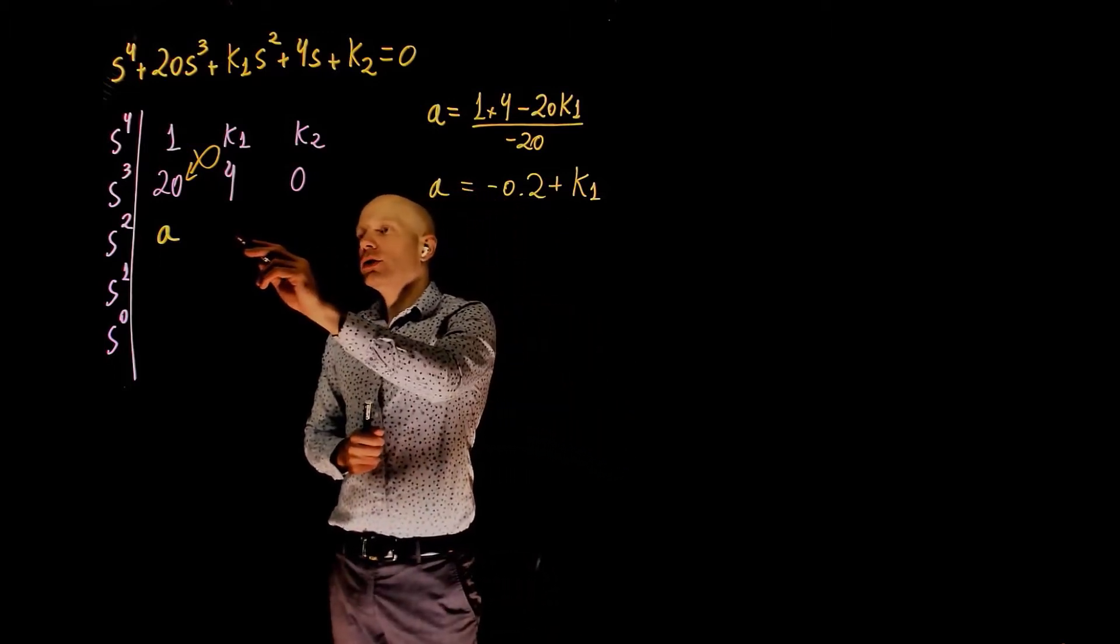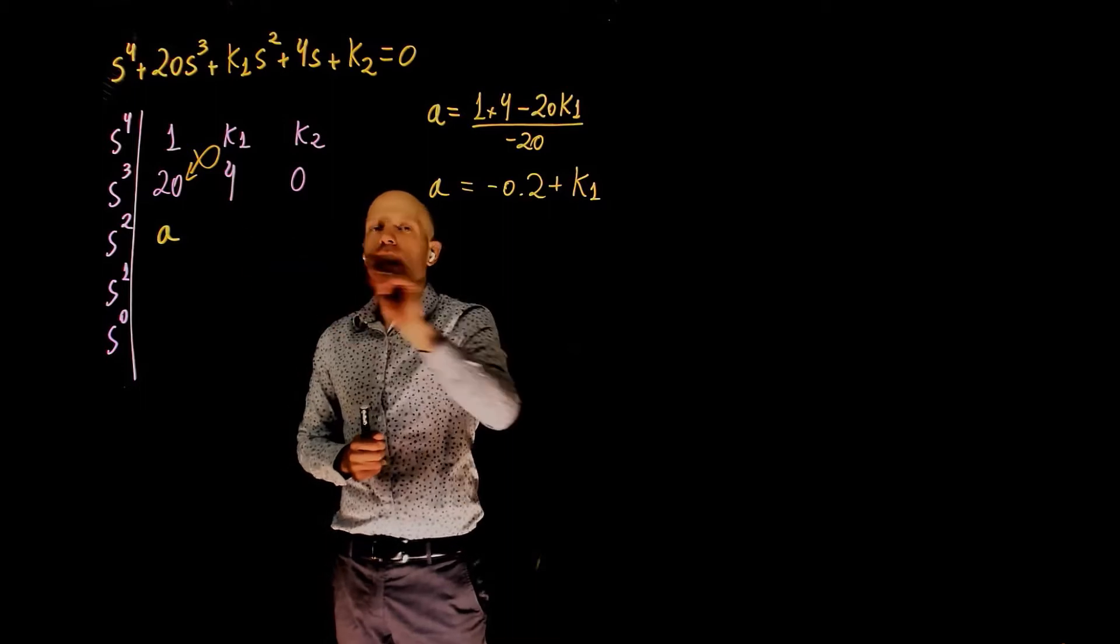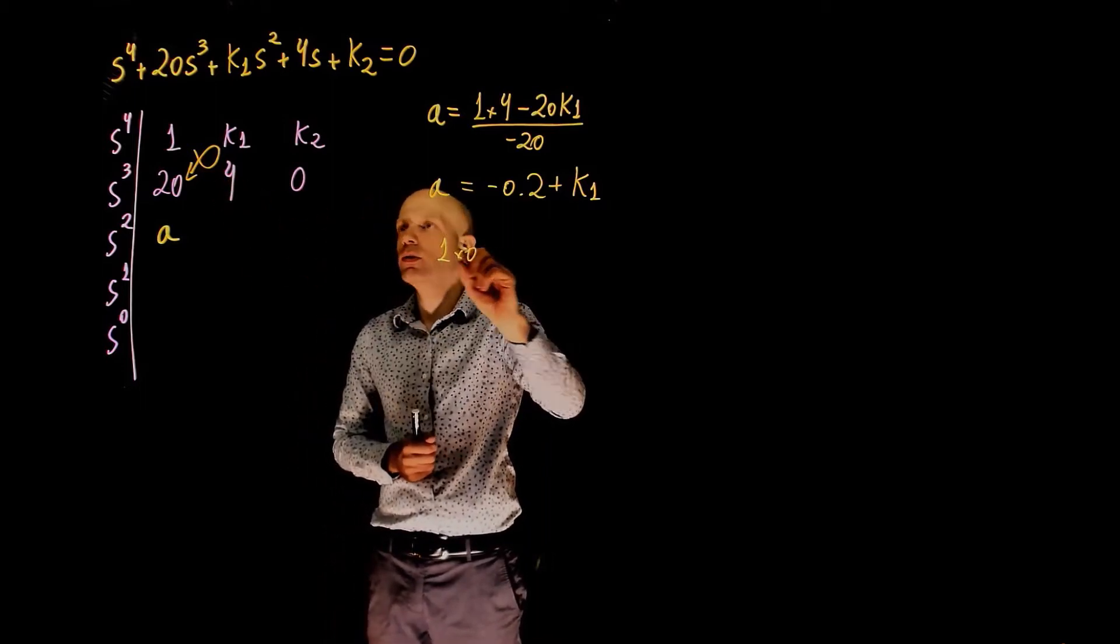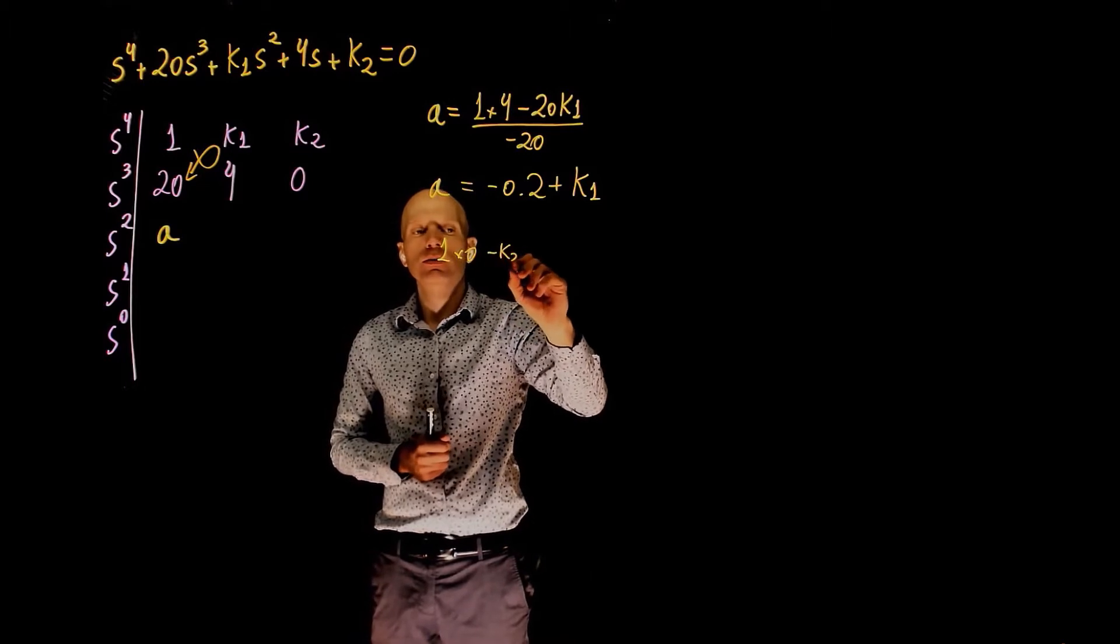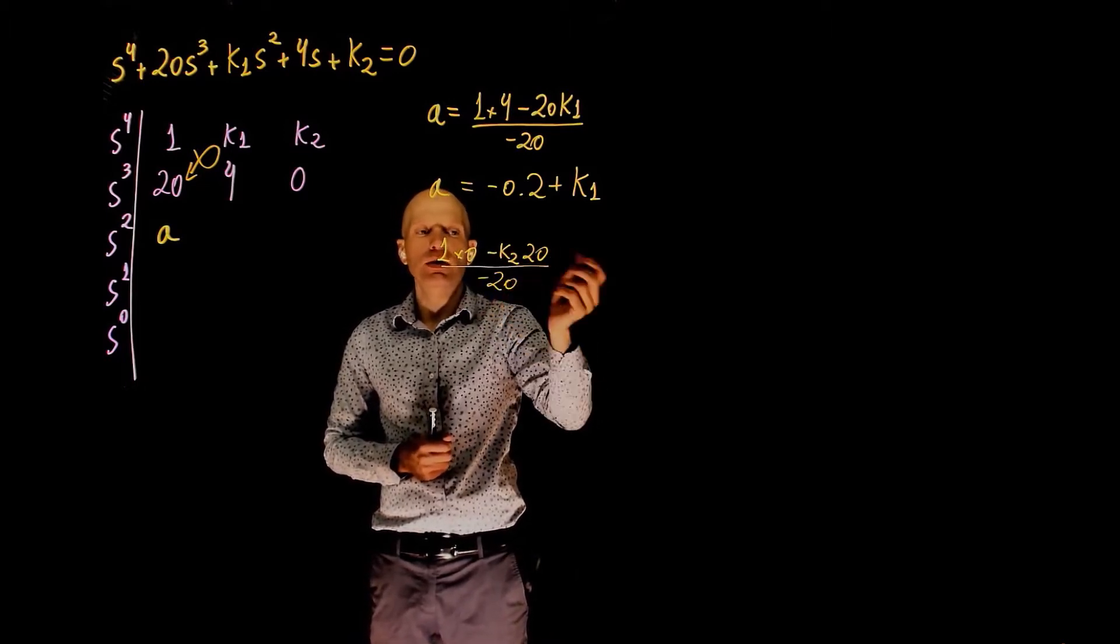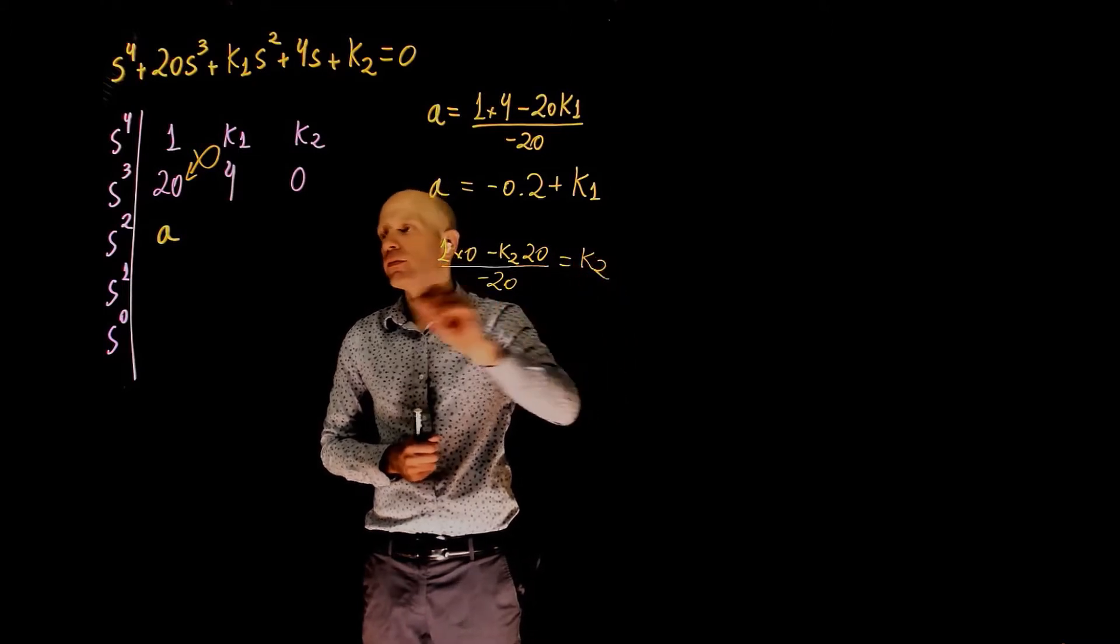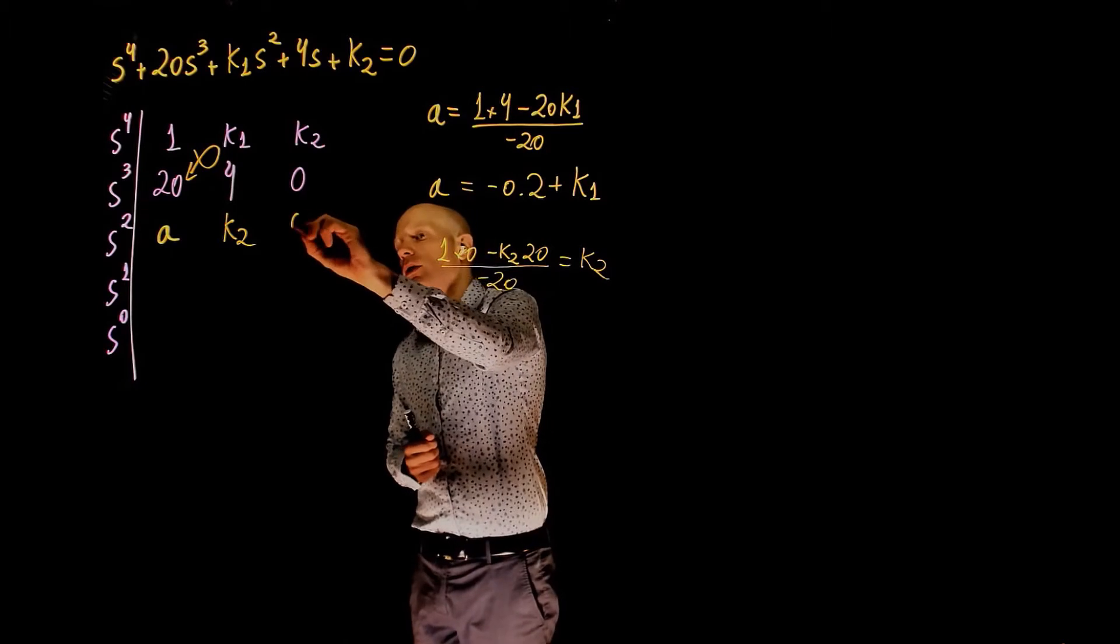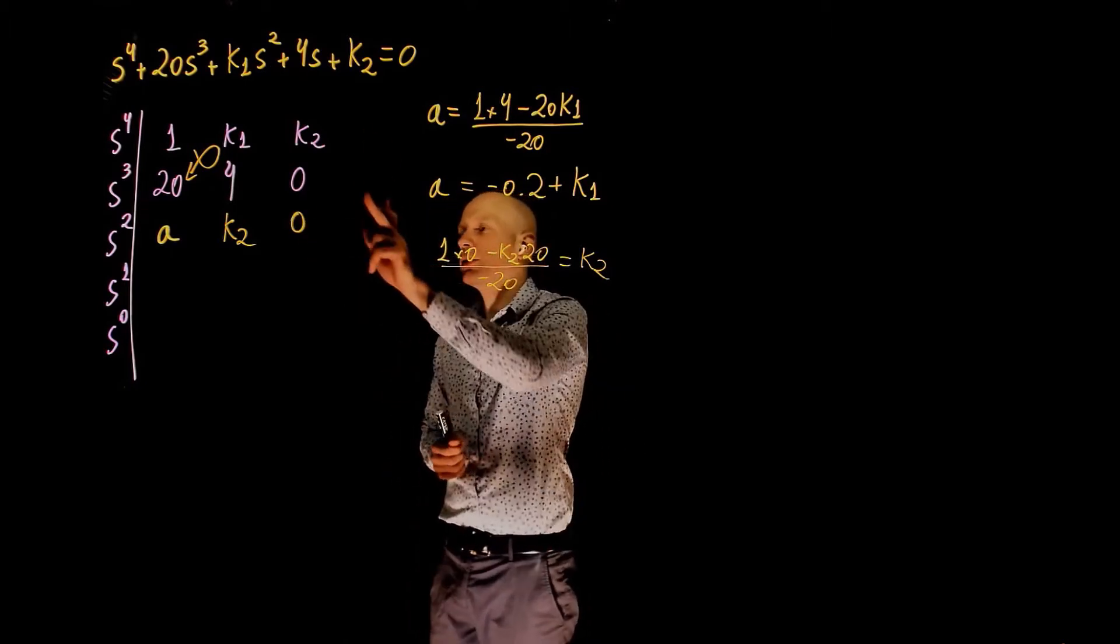The coefficient of s2 is k2. The coefficient here is 1 times 0 minus k2 times 20 divided by negative 20, that is k2. Here we have k2, following k2, we have 0, the column here is 0.